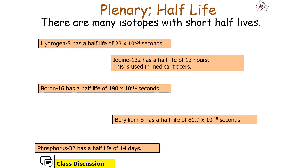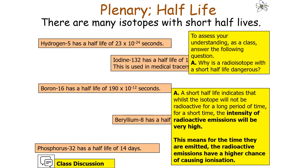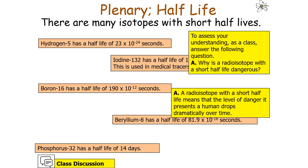There are also many isotopes with short half-lives. A famous example is iodine-132, which has a half-life of 13 hours and is used in medical traces. A short half-life indicates that whilst the isotope will not be radioactive for a long period of time, for a short period of time the intensity of radioactive emissions will be very high. This means the radioactive emissions have a higher chance of causing ionisation because there are a lot of them initially. The level of danger a short half-life isotope presents to a human dramatically drops over a human lifetime.